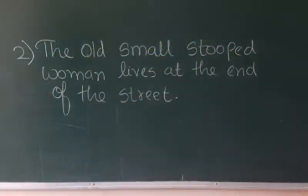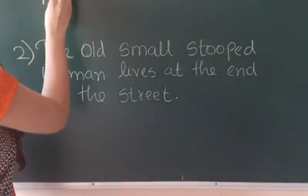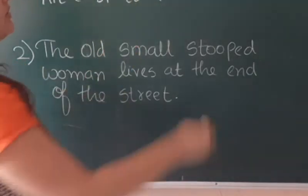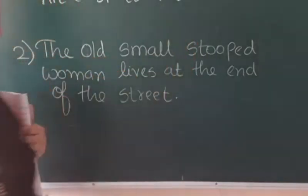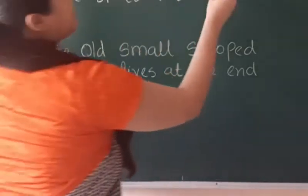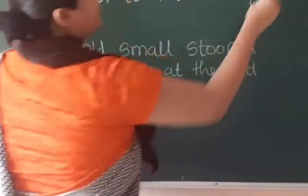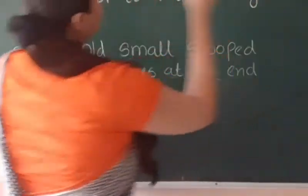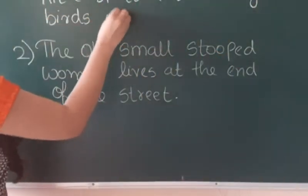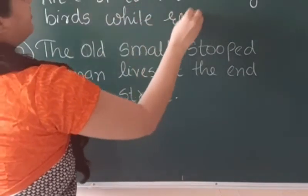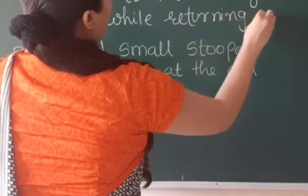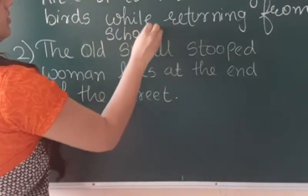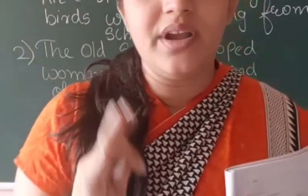Now we have to arrange these three adjectives. We will write: 'Rita spotted' — first will be the number: six, then opinion/quality: large, and at last the color: brown birds, while returning from school. Full stop.